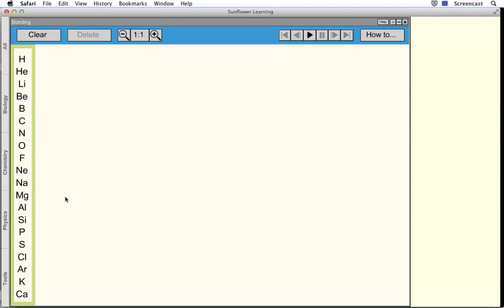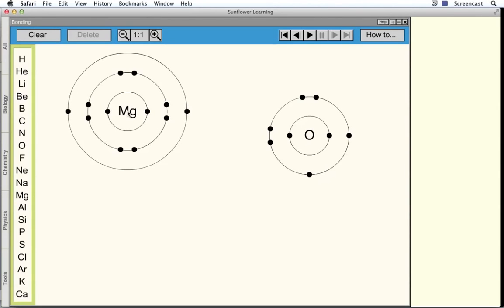This time, we'll look at oxygen and magnesium. Magnesium's in group 2. It has two electrons in its outer shell. Oxygen is in group 6. It has six electrons in its outer shell. Once again, I'm going to show the electrons in the non-metal as crosses, just so you can see what's going on.